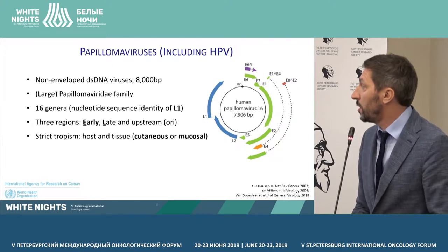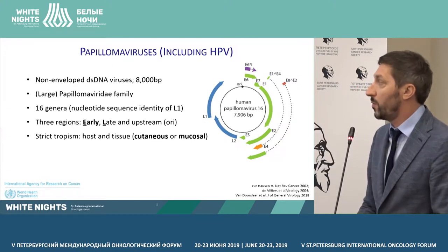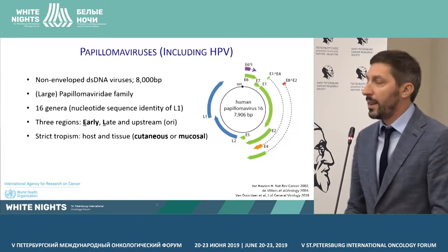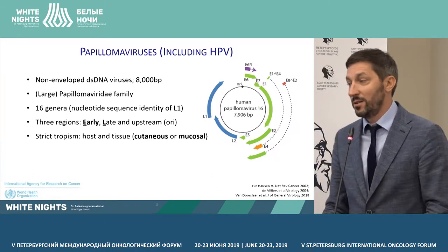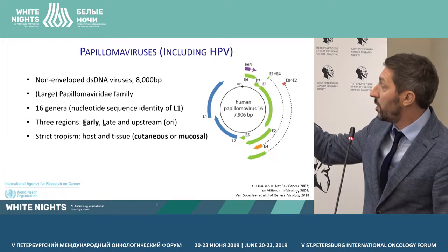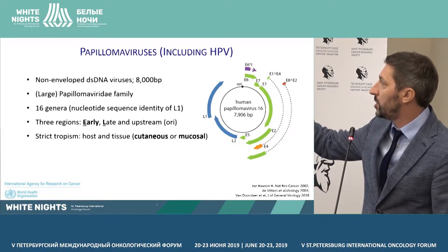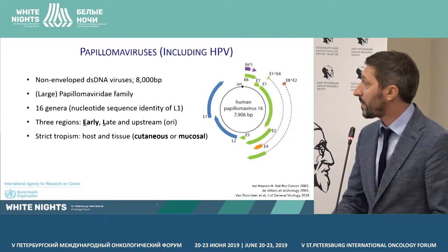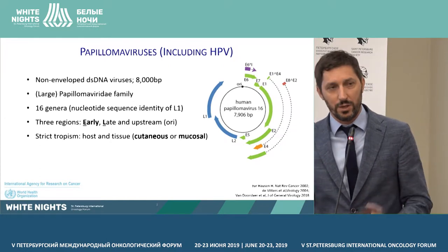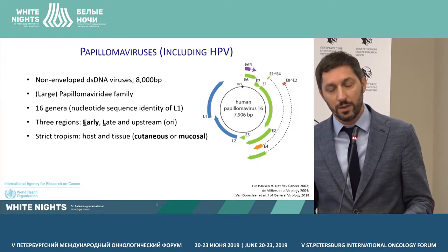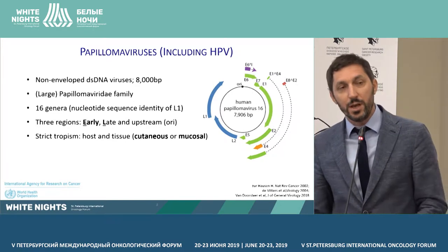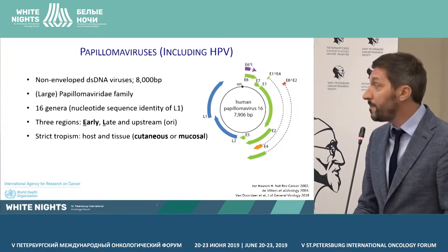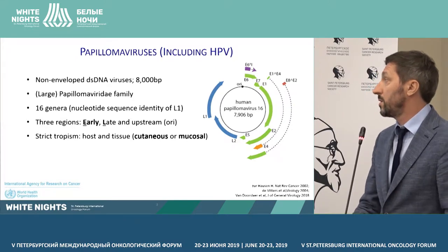The early region — the green arrows marked with E — the late region in blue, and the upstream regulatory region. These are the regions between L1 and E6/E7 with the origin of replication. They are responsible for different functions associated with transmission, cell connection, transport and development, and so on.